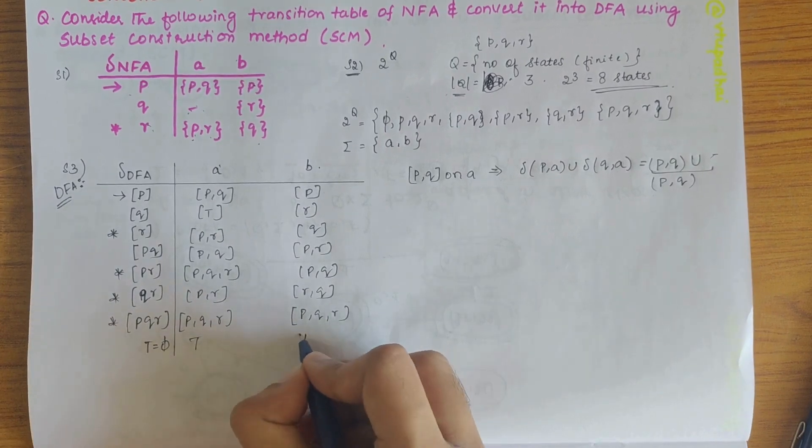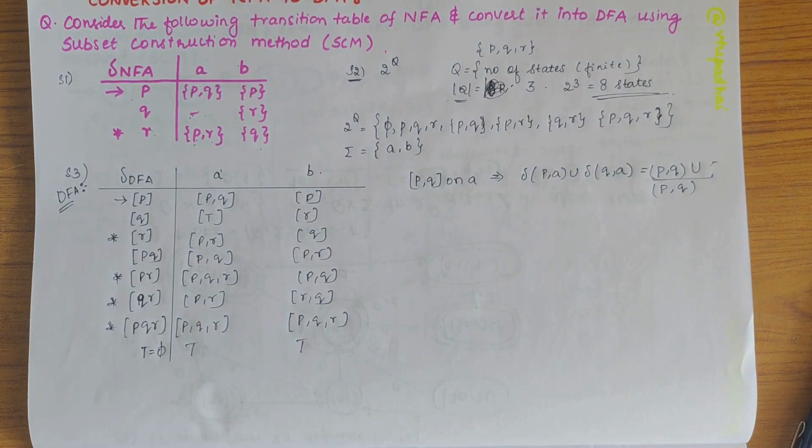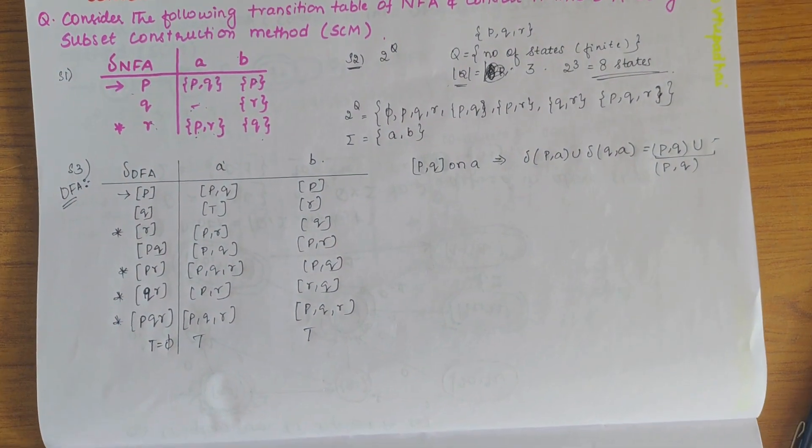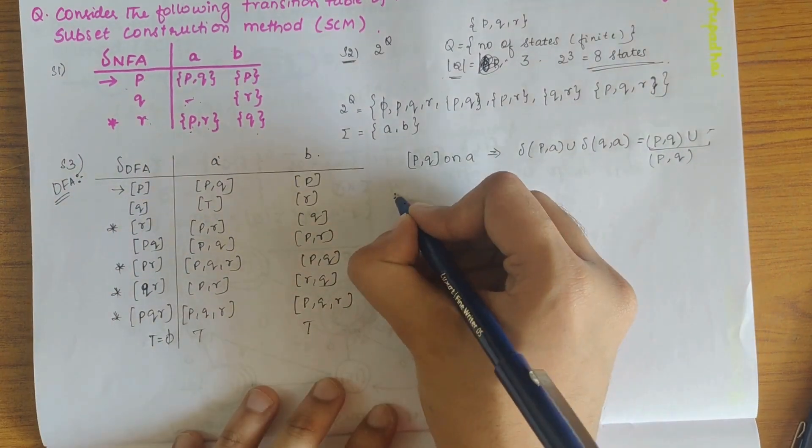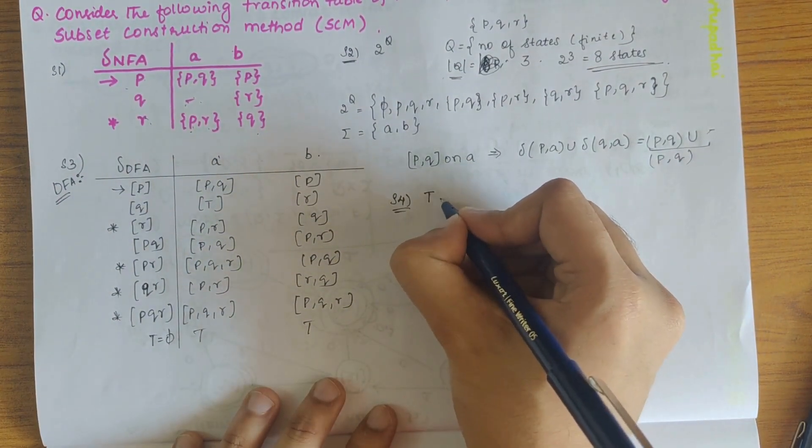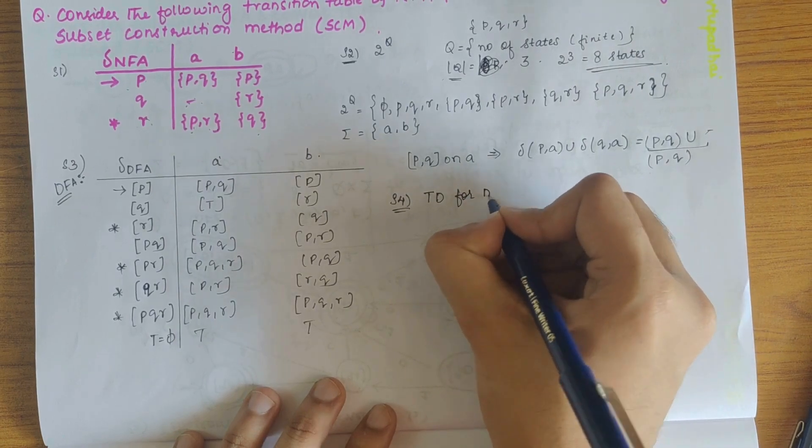So for the trap state, it will be the self loop only. So now we have done writing the transition table, our next step is to draw the transition diagram for DFA.